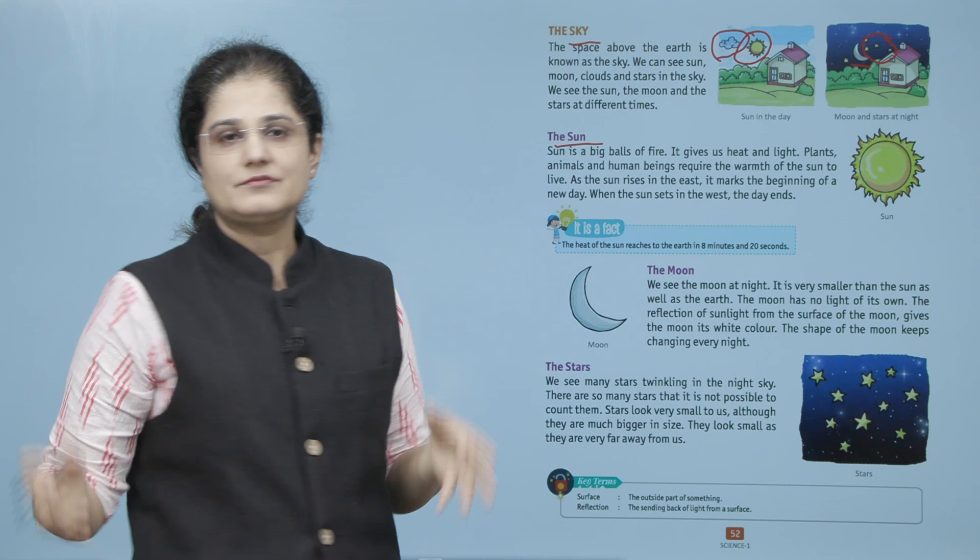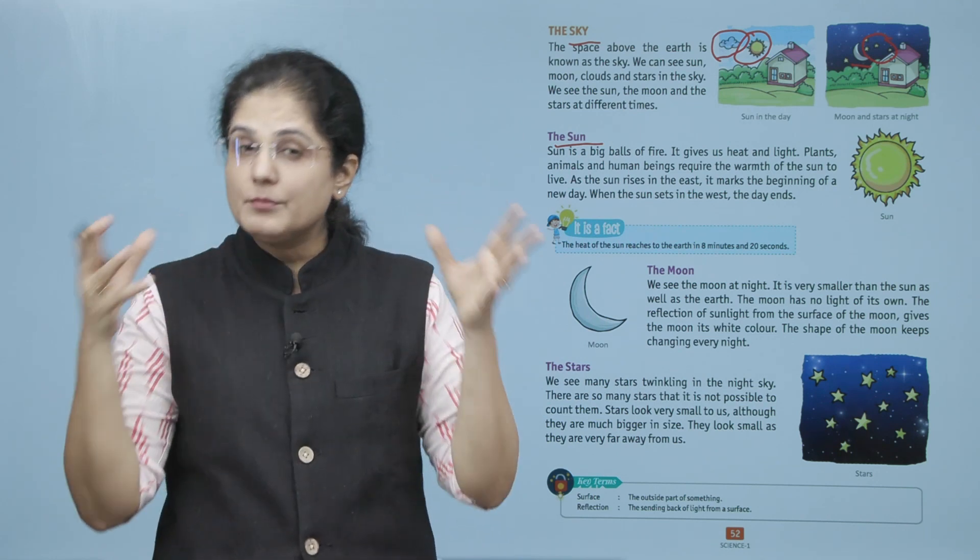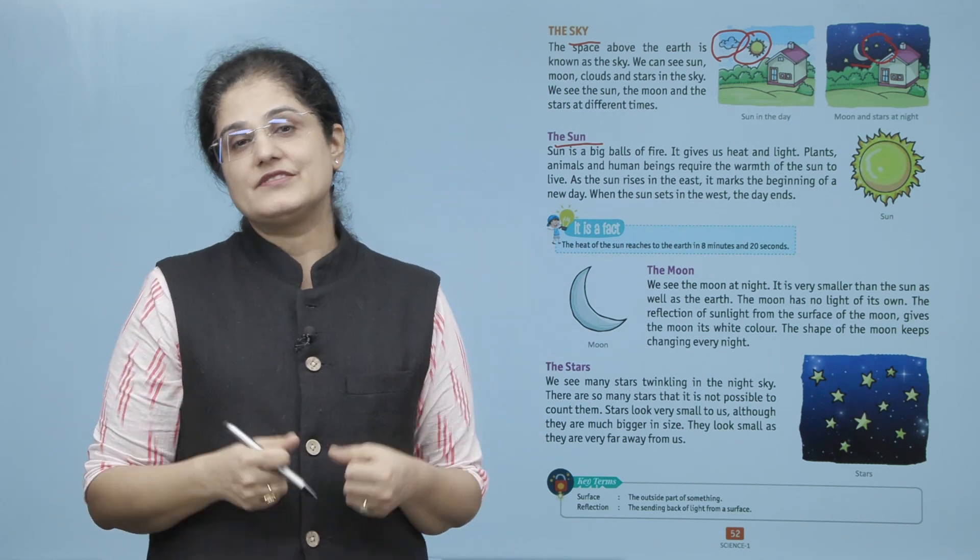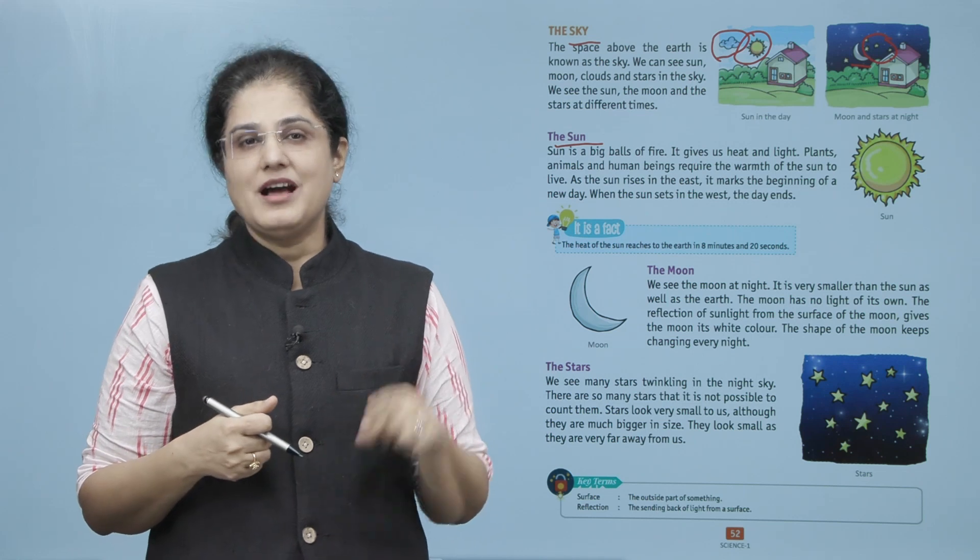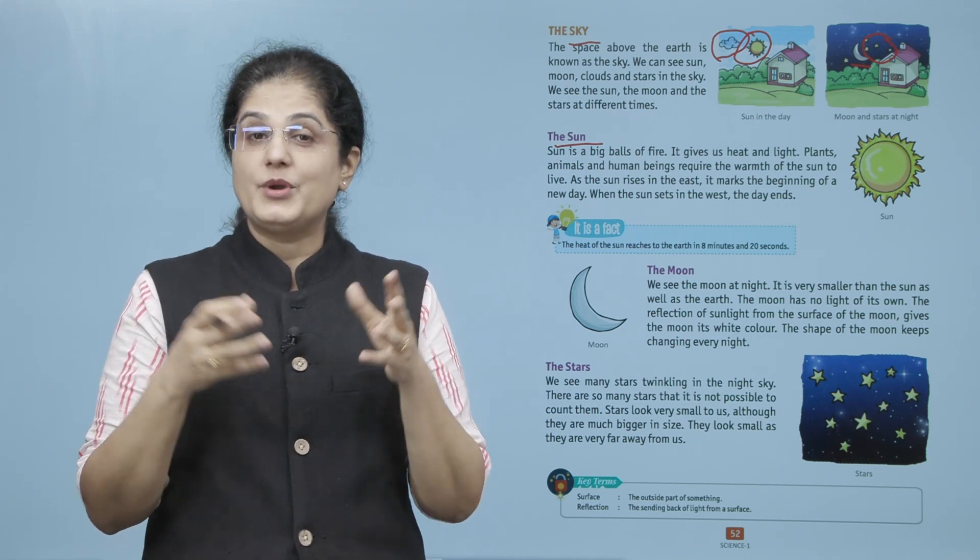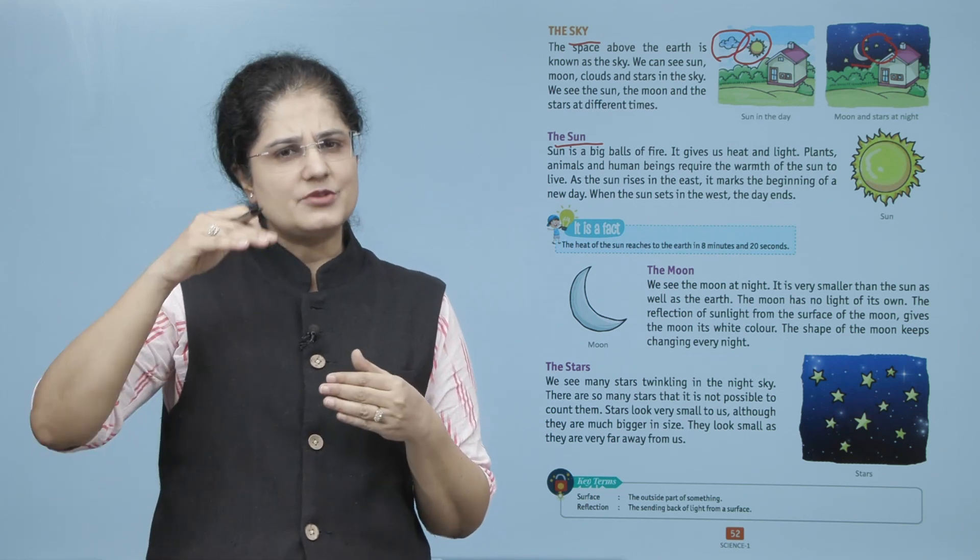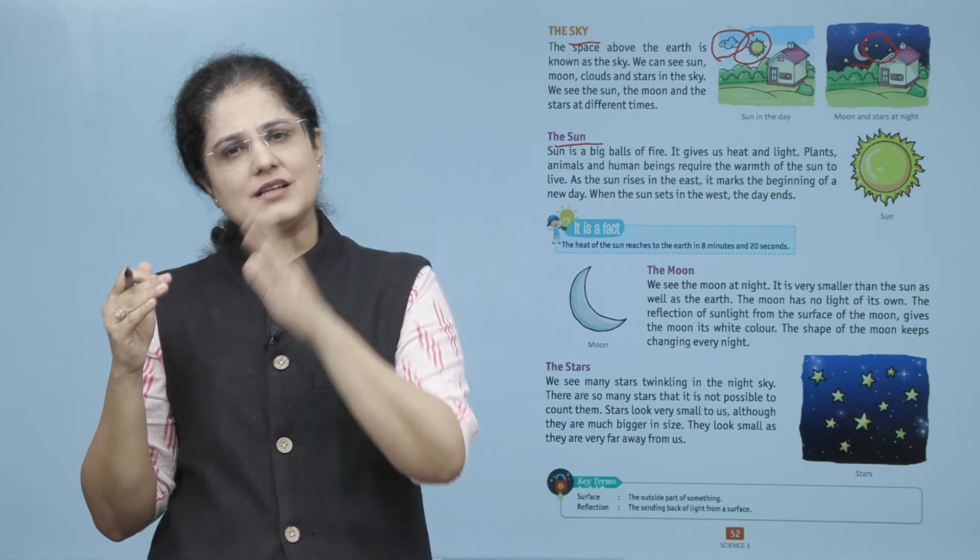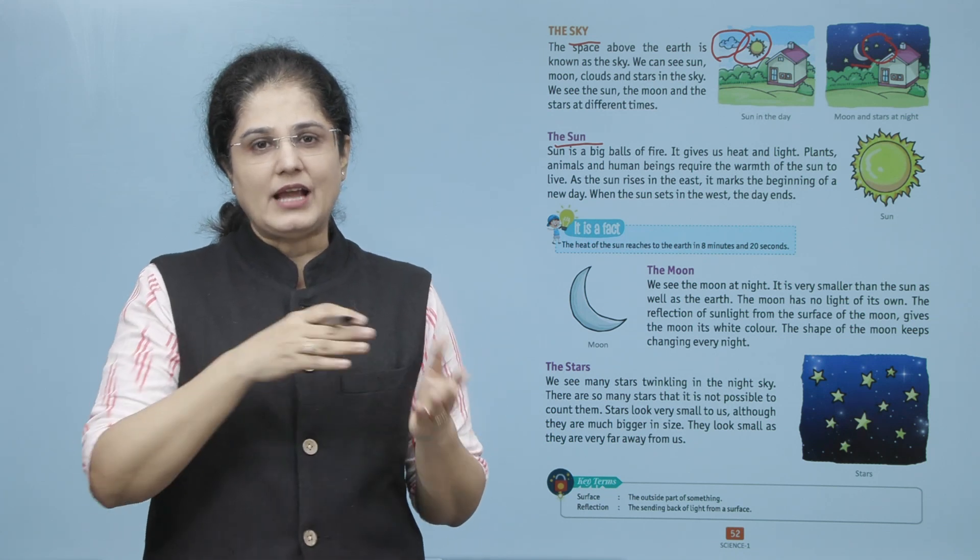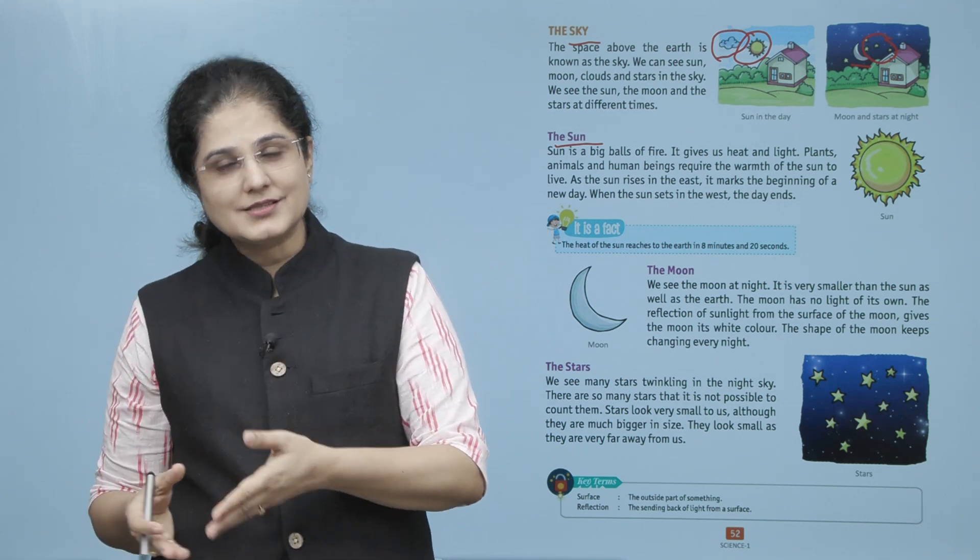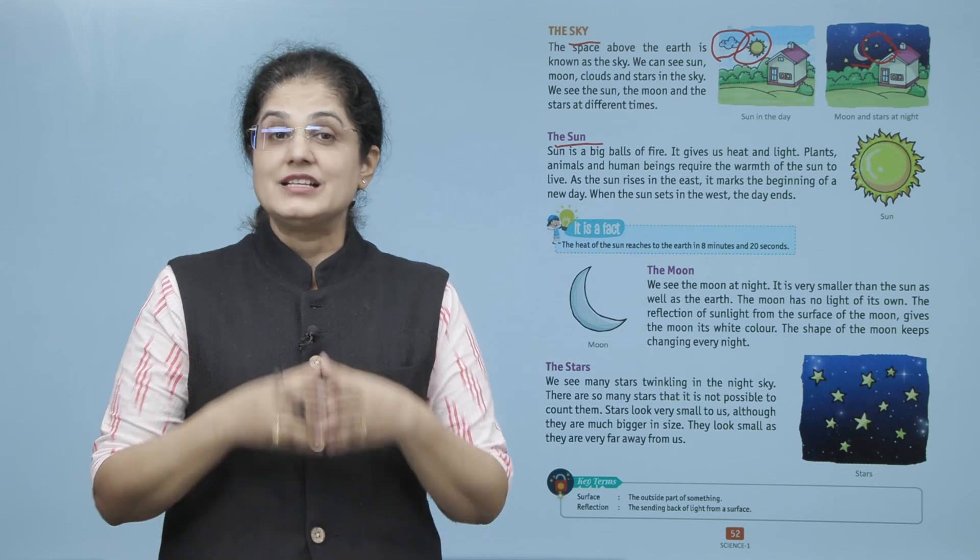Sun is a big ball of fire. It gives us heat and light. Plants, animals and human beings require the warmth of the Sun to live. As the Sun rises in the East, it marks the beginning of the day and when the Sun sets in the West, the day ends.